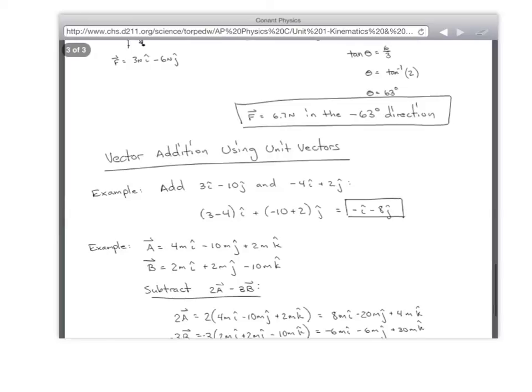All right, so there it is. Adding unit vectors, 3i minus 10j and negative 4i plus 2j. Oh, my gosh, what's the answer? Negative 1i. Negative 1i. And negative 8j. You see how easy that is? Yeah. That's, like, so easy. That's why, honestly, if I'm given the choice between dealing with the unit vectors and dealing with the stuff we did last year, unit vectors is so much easier.